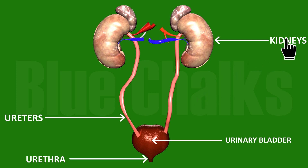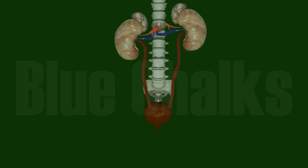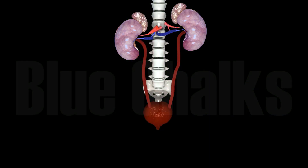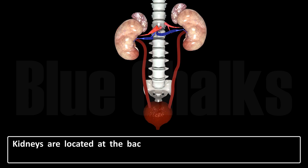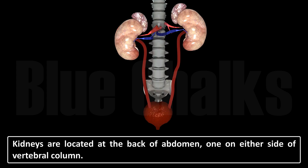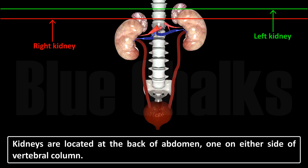The main organs of excretion in the human body are the kidneys. There are two bean-shaped dark brown kidneys. Kidneys are located at the back of the abdomen, one on either side of the vertebral column. Both the kidneys lie at different positions. The right kidney is placed slightly lower than the left kidney due to the presence of the liver on the right side.